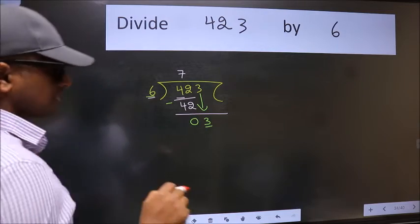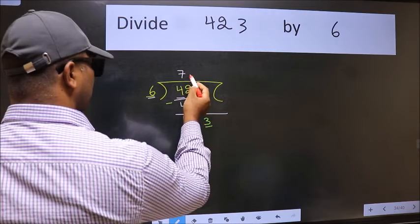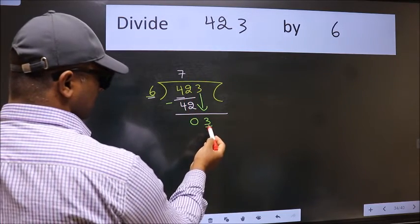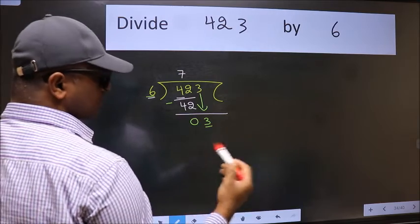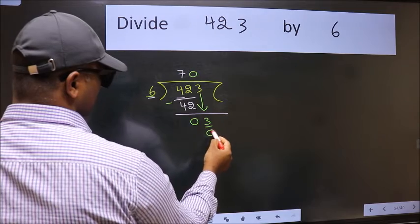So what you should think of doing is which number should we take here. If I take 1, we will get 6. But 6 is larger than 3. So what we do is we take 0. So 6 into 0, 0.